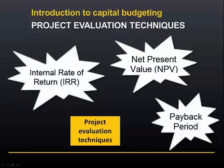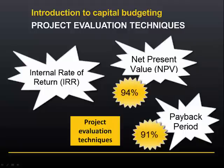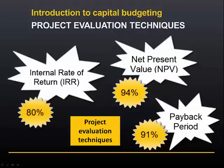A survey of Australian businesses showed that 94% used NPV, 91% used the Payback Period, and 80% used Internal Rate of Return. The fact that these numbers sum to more than 100% indicates the extent to which many businesses use more than one method.